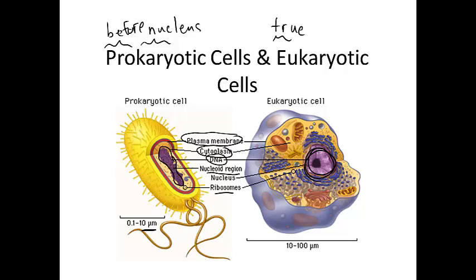With prokaryotic cells, really what we're talking about is bacteria. Eukaryotic cells would be our animal cells, our plant cells, and also fungal cells. You might think that eukaryotes would be the most diverse group based on that — there seems to be a big difference between an animal cell and a fungal cell. But in fact, the most diverse group is the prokaryotic cells. If you were to look at bacteria all over the planet, you'd find a huge range in the DNA that they have, so they are a more diverse group.